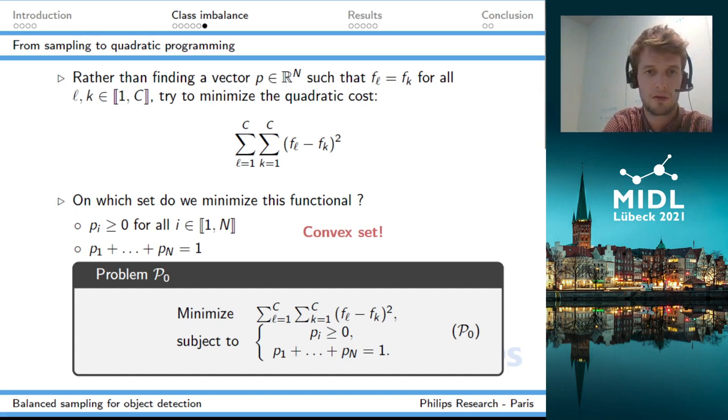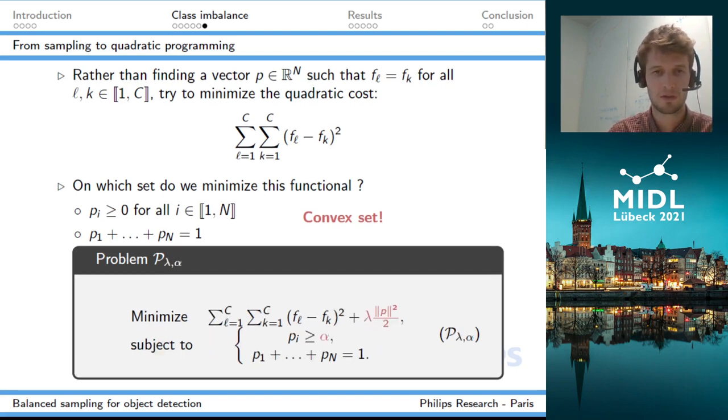Let me remind you that pi is the probability with which we sample image i. When we solve this problem, nothing prevents pi from being equal to zero for some images, which is a problem because we'll never sample them and lose some images in the dataset. So to avoid this, we impose another constraint: that pi is greater than some parameter alpha to ensure we don't drop any images. We're also going to add some regularization term to the cost to prevent high outliers in p. This is the problem we describe and denote as P of lambda and alpha, where lambda and alpha are two hyperparameters that can be set by the user. This is still a convex problem, so it can still be solved very efficiently.